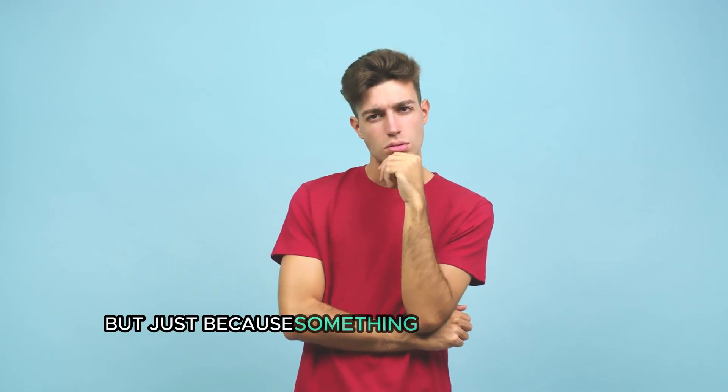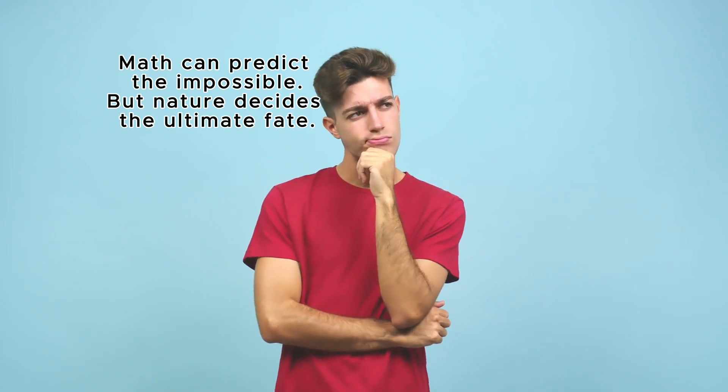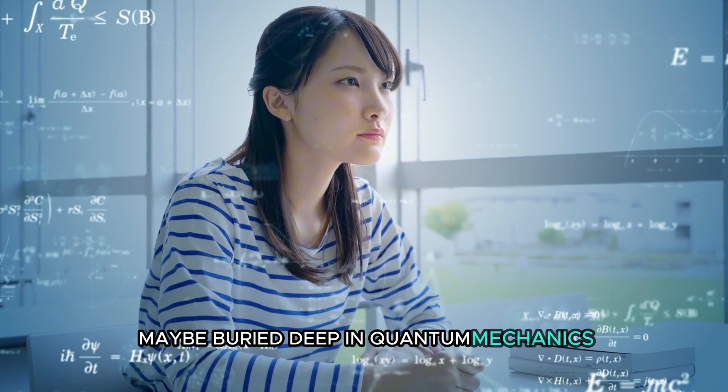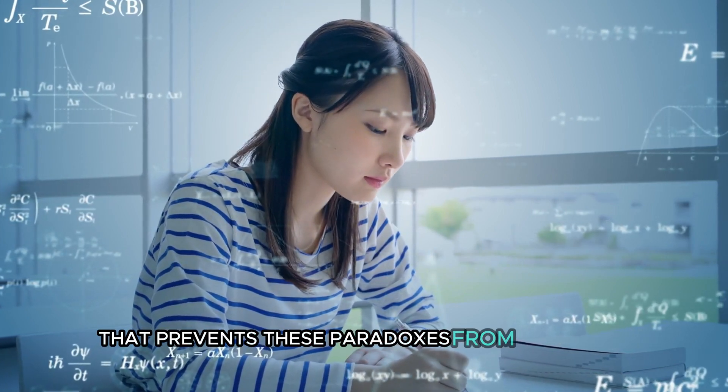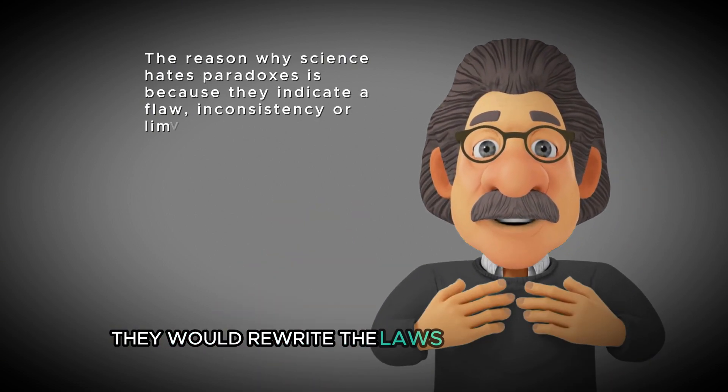But just because something is mathematically possible, does that mean it can actually exist in reality? Or is there some hidden rule, maybe buried deep in quantum mechanics, that prevents these paradoxes from happening? We don't know. But if bootstrap paradoxes can exist, they would rewrite the laws of the universe.